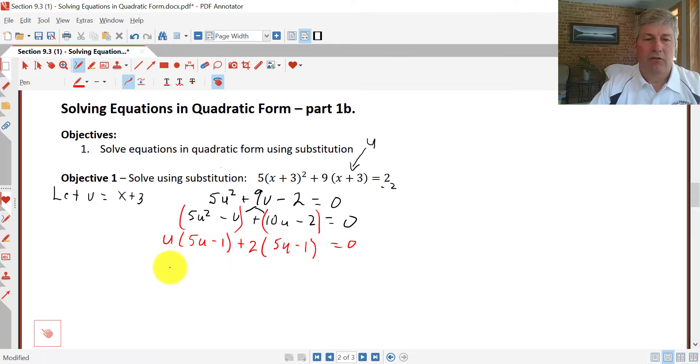And our factors are (u + 2)(5u - 1) = 0. We solve for u, and we get u = -2, u = positive 1/5.